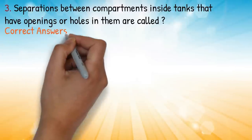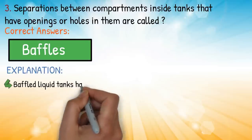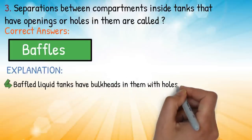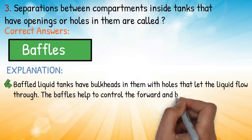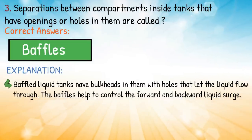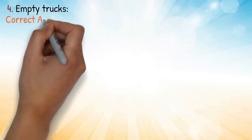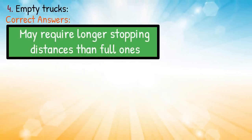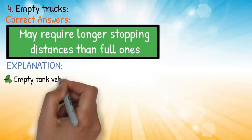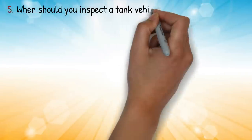Explanation: baffled liquid tanks have bulkheads with holes that let the liquid flow through. The baffles help control the forward and backward liquid surge. Question four: empty trucks — correct answer: may require longer stopping distances than full ones. Explanation: empty tank vehicles may take longer to stop than full ones.